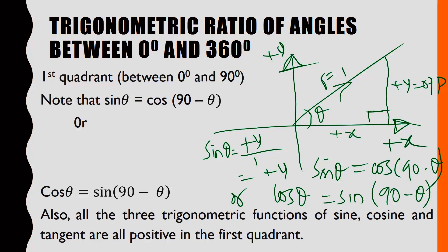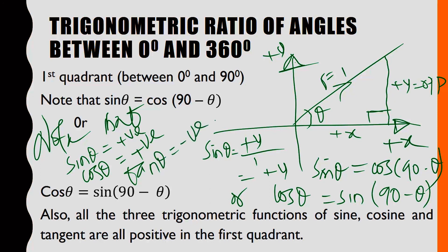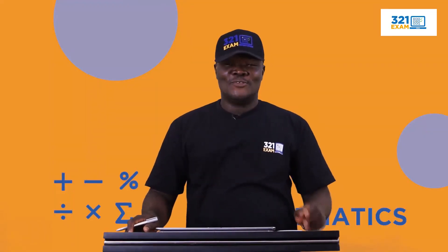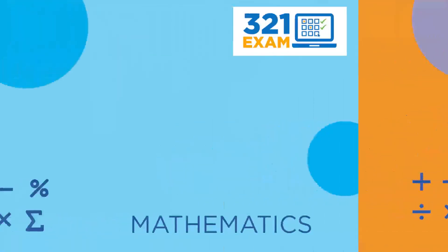Not only that. Note that sin θ is positive, cos θ is positive, tan θ is positive. The three trigonometry ratios in the first quadrant, this is first quadrant, are all positive. Take note. We'll come to an end. I'll see you for the continuation of this topic in the next lesson. Thank you.